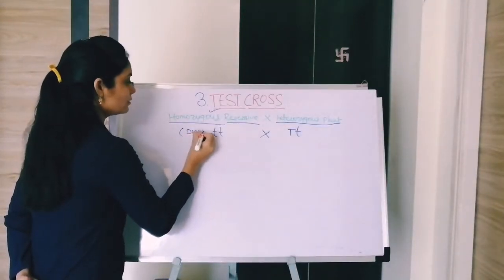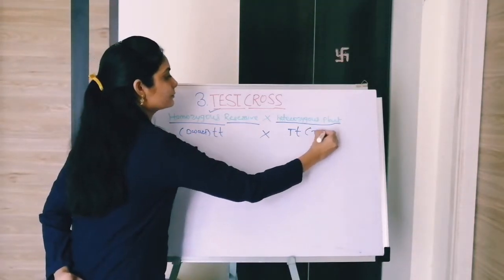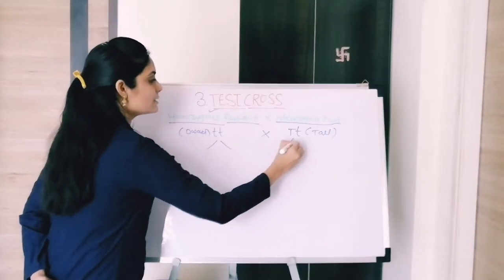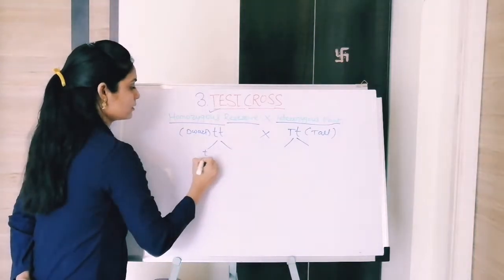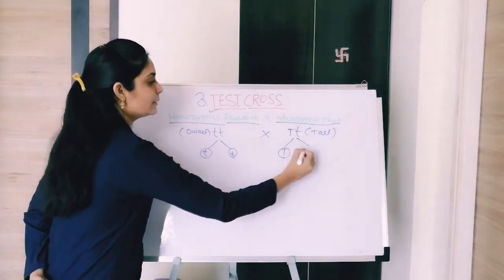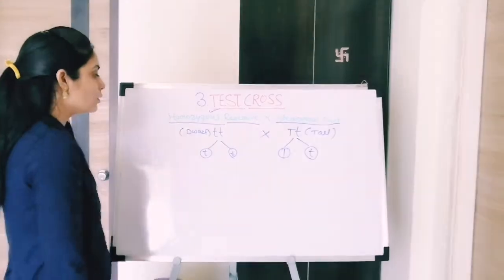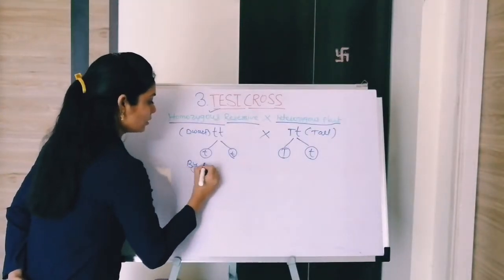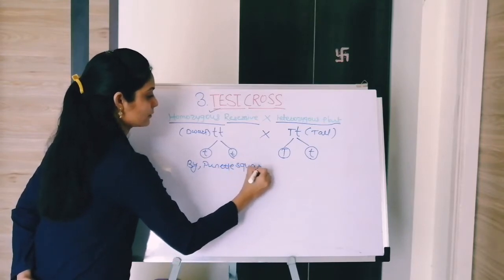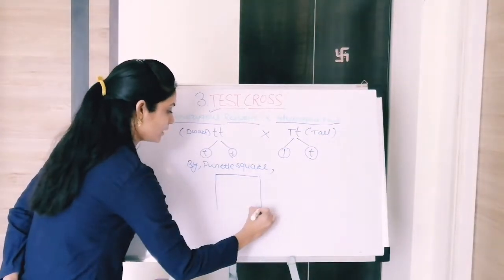So this is the homozygous dwarf plant and this is the heterozygous tall plant. The gametes that form: from the dwarf plant, small t and small t; from the heterozygous plant, capital T and small t. By the Punnett square method, we will draw that chart.